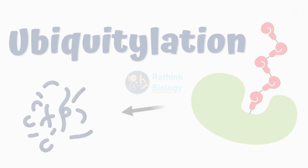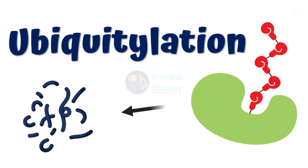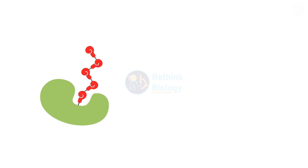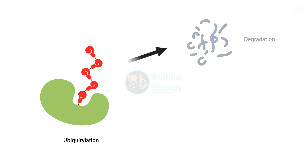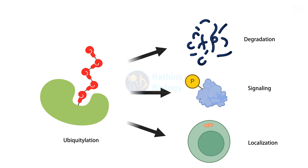Hello and welcome back to our channel. Today's topic is ubiquitylation, the process that marks proteins for different functions in the cell, such as degradation, signaling, or localization.